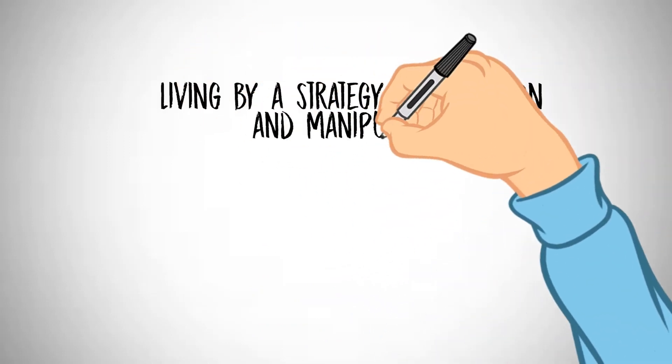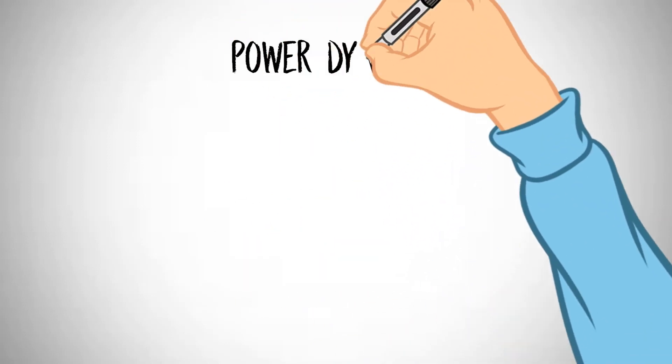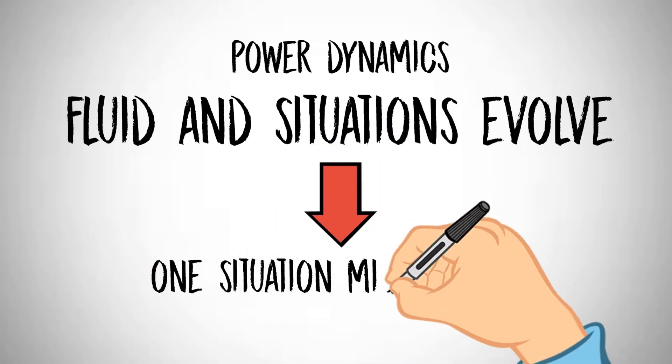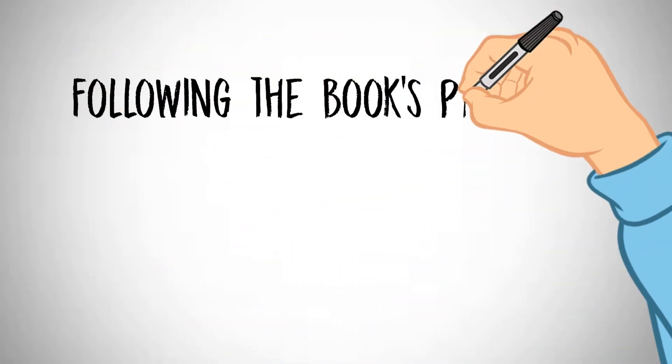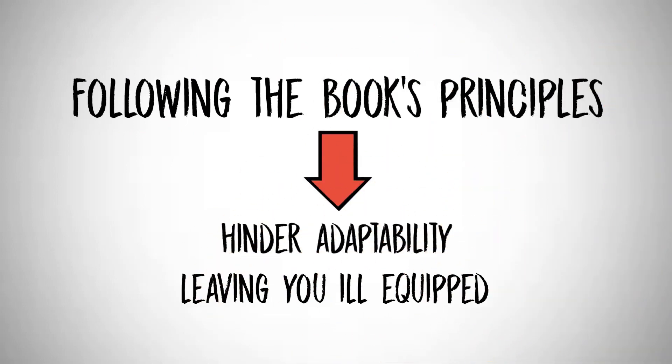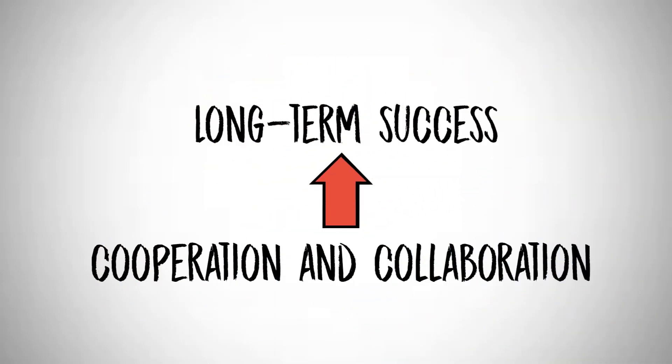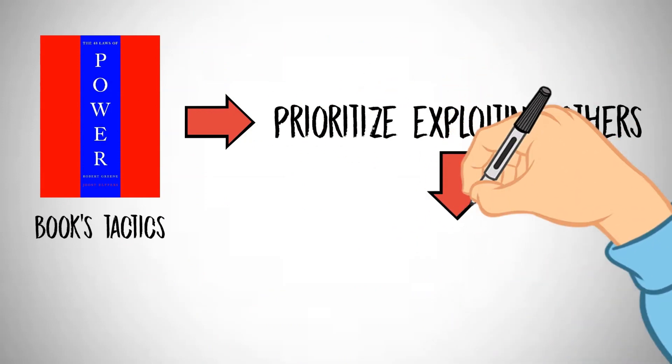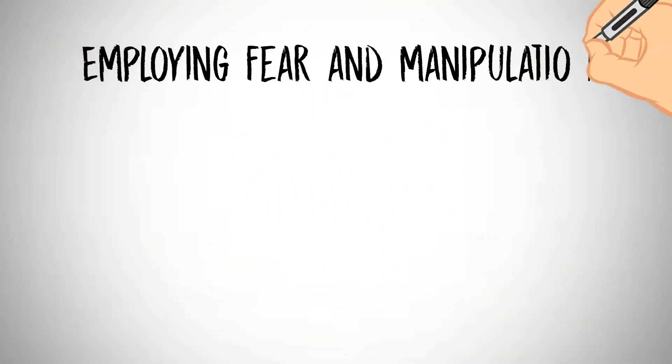Adhering to the book's advice may introduce ethical dilemmas that weigh on your conscience over time. Living by a strategy of deception and manipulation can be emotionally taxing and corrode your sense of integrity. Power dynamics are fluid and situations evolve. What proves effective in one situation might not be applicable in another. Rigorously following the book's principles can hinder adaptability, leaving you ill-equipped to navigate changing scenarios.